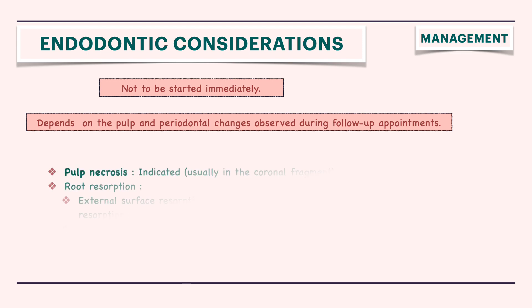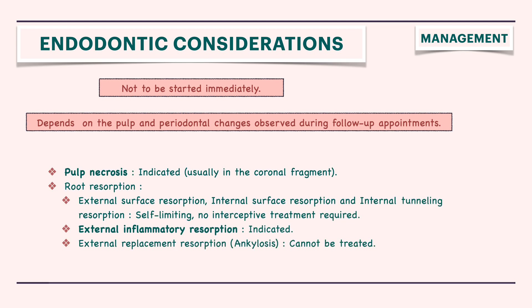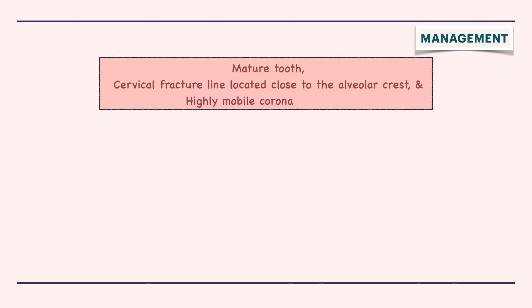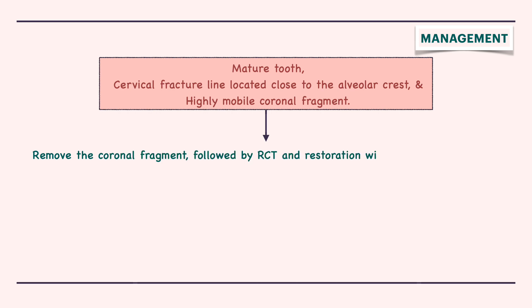Endodontic treatment is indicated in case of pulp necrosis and external inflammatory resorption. In case of mature teeth with a cervical fracture line located close to the alveolar crest and a highly mobile coronal fragment, it is recommended to remove the coronal fragment, followed by root canal treatment and restoration.